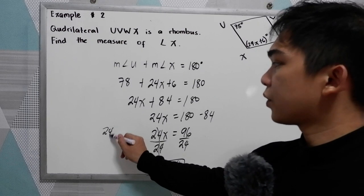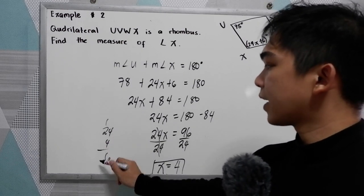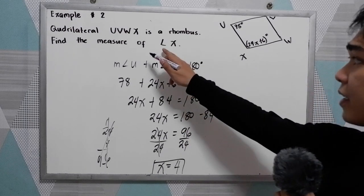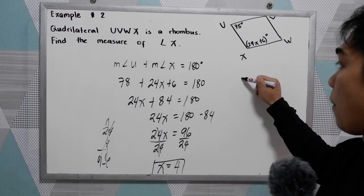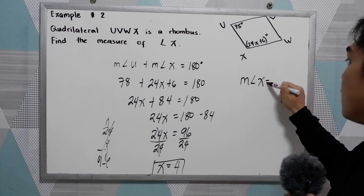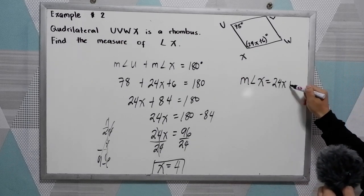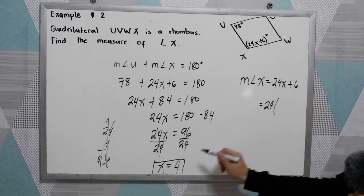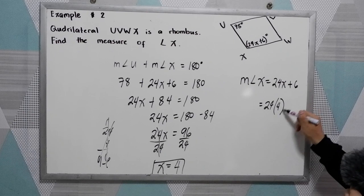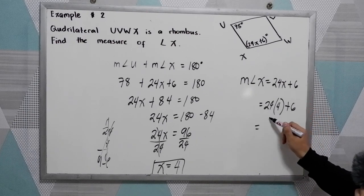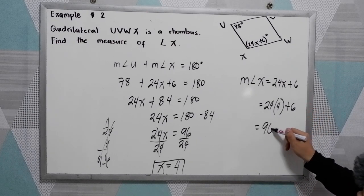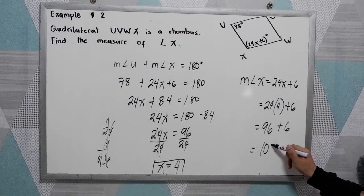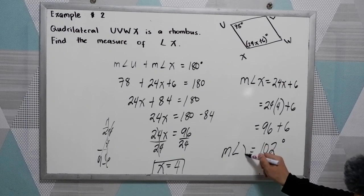Let's check: 24 times 4 is 96. Now we find angle X. The measure of angle X equals 24X plus 6. Substituting X equals 4: 24 times 4 is 96, plus 6, that gives us 102 degrees. That is the measure of angle X.